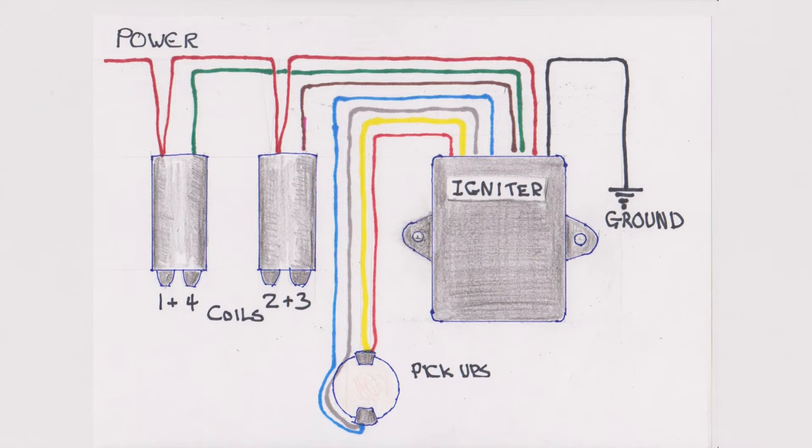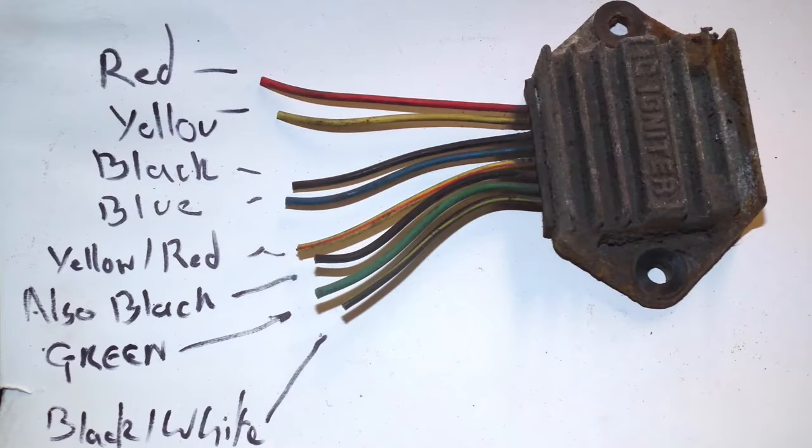To recap then, an igniter box will have a power wire, a ground wire, a wire for each coil, and somewhere between two and four pickup wires. Taking this GPZ 550 igniter as an example, the pickups have four wires: red, blue, yellow, and black. The igniter has eight wires: red, blue, yellow, and black for the pickups.